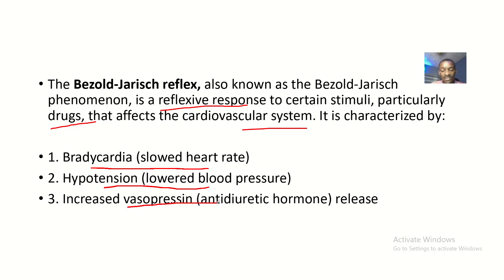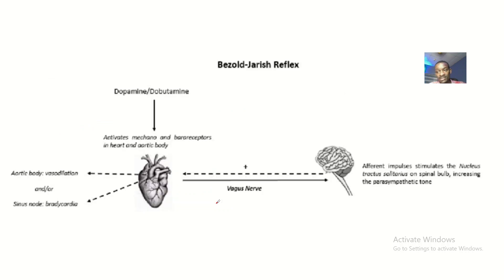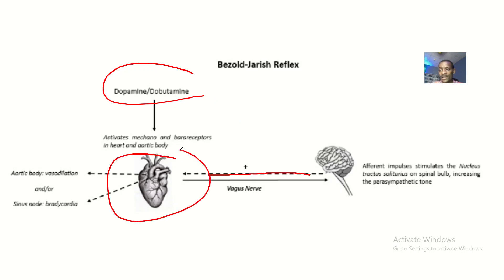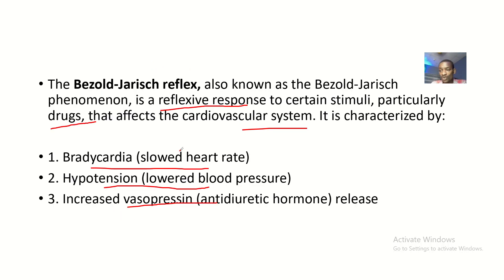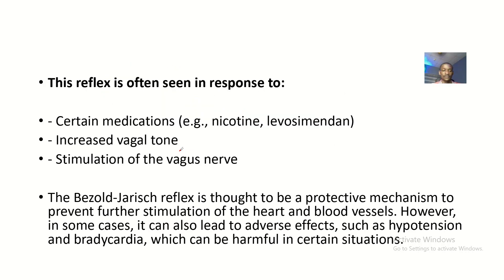It is also characterized by hypotension, which is lower blood pressure, and by increased vasopressin — that's anti-diuretic hormone release. This means in the basal gyrus reflex you will not be urinating much. So the characteristics are bradycardia, hypotension, and increased vasopressin.